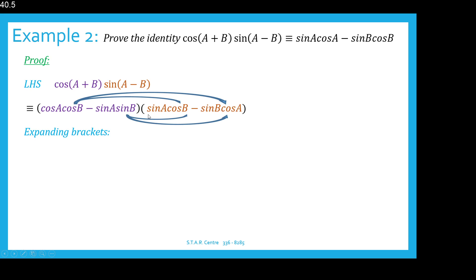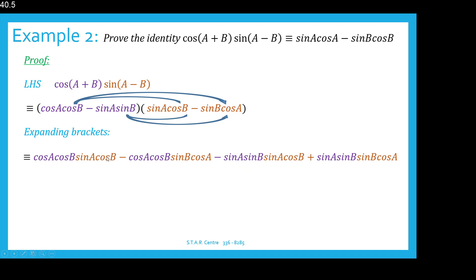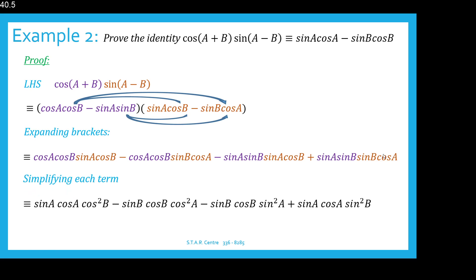Next we expand brackets — each term in the first bracket must be multiplied by each term in the second bracket. The first term is cos A cos B, multiplied by each term in the second bracket. After expanding, simplifying gives us cos B times cos B as cos squared B, and cos A times cos A as cos squared A.